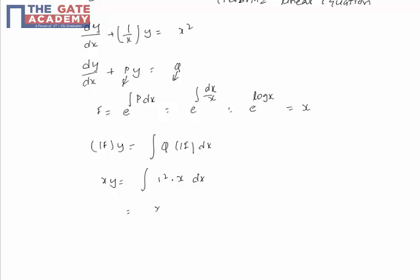This can be written as x cubed, giving x^4/4 plus c equals xy. So 4xy equals x^4 plus 4c. Since 4c is a constant, it can be written as c. x^4 plus c equals 4xy. So the answer is option C.